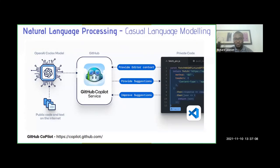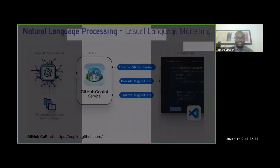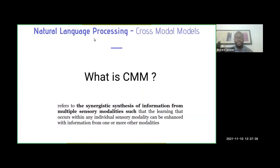Before continuing to cross-modal models, people would say GitHub Copilot is coming to take developers' jobs — but no, it would actually enhance the workflow experience. Cross-modal models (CMM) refer to the synergistic synthesis of information from multiple sensory modalities, such that learning within one sensory modality can be enhanced by one or more other modalities. This can be broken down into two case studies: detection of fake news and digital marketing.